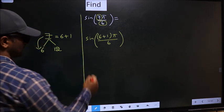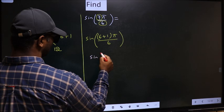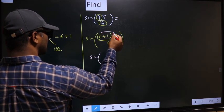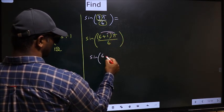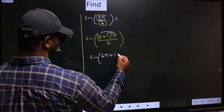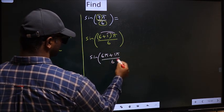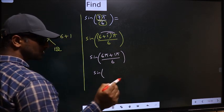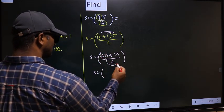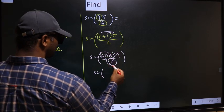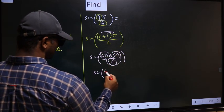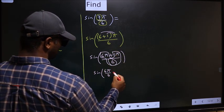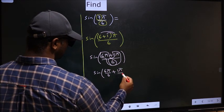Next, sine of... Now you should open up the brackets. So you get 6π plus 1π by 6. Now sine of, you should split the denominator in this way: that is 6π/6 plus 1π/6.